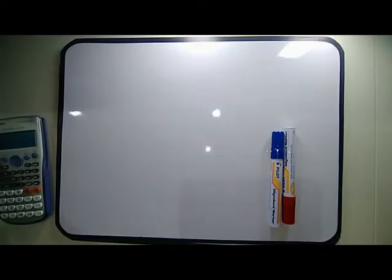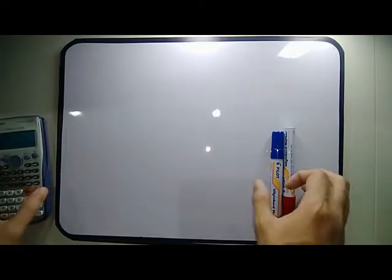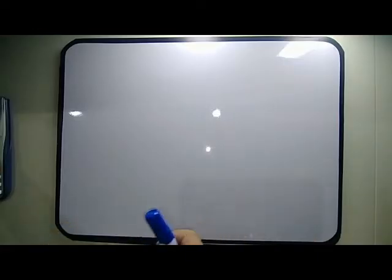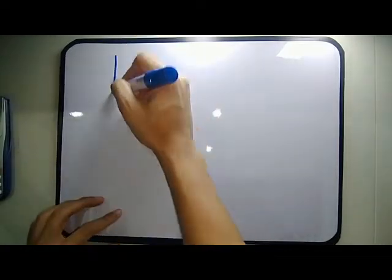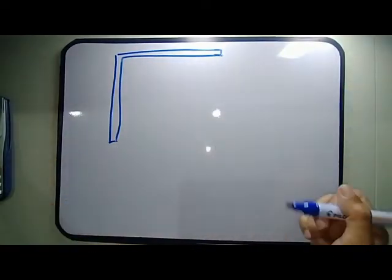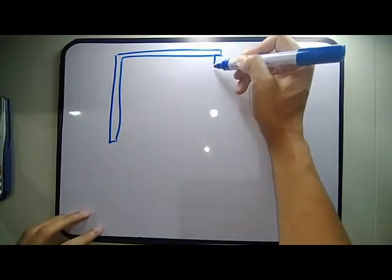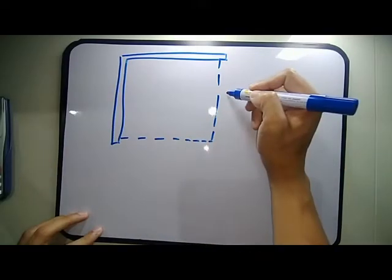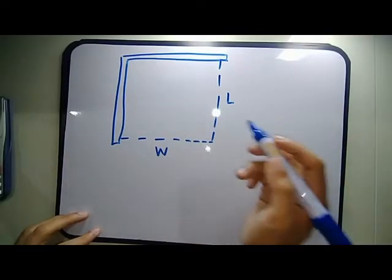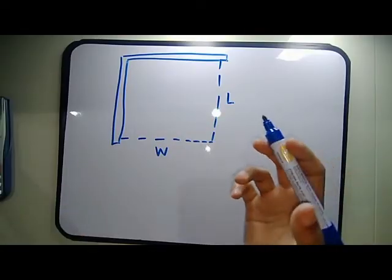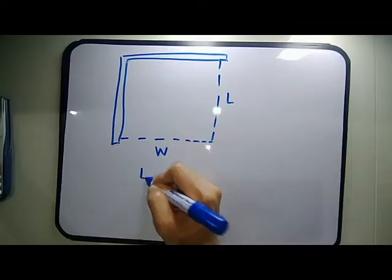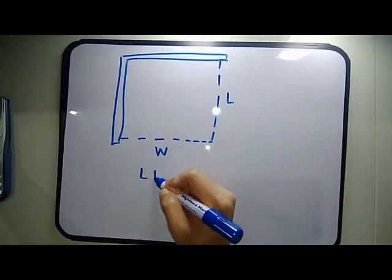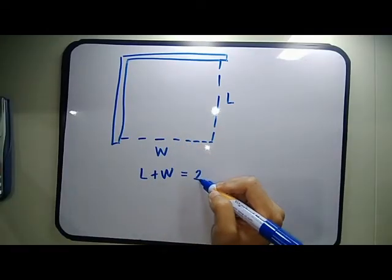What is the maximum rectangular area that can be fenced in using two perpendicular corner sides of an existing wall? You have fencing of 20 feet length, so let's illustrate. The rectangular area is fenced using two perpendicular corner sides — you have an existing wall which are perpendicular to each other, and you have the fencing. Let's say this is the length and this is the width. The total length of your fencing is limited to 20 feet, so length plus width equals 20 feet.